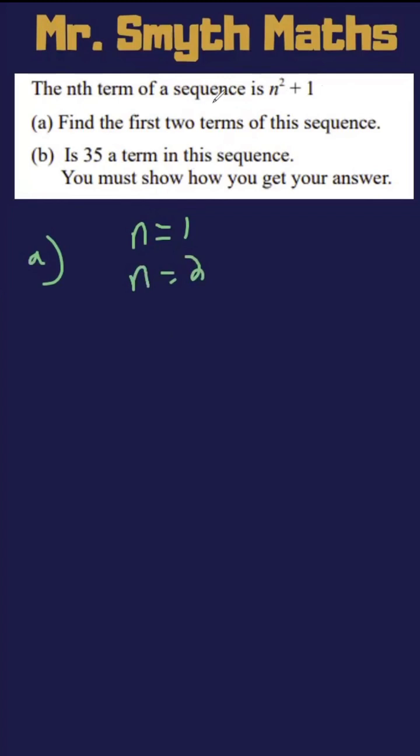So what we're going to do here is plug in n equals 1 into this. Where we see n, we're going to swap this for 1. So here we've got 1 squared, then we're going to add on the 1. So 1 squared gives us 1, add on the 1 gets us 2.